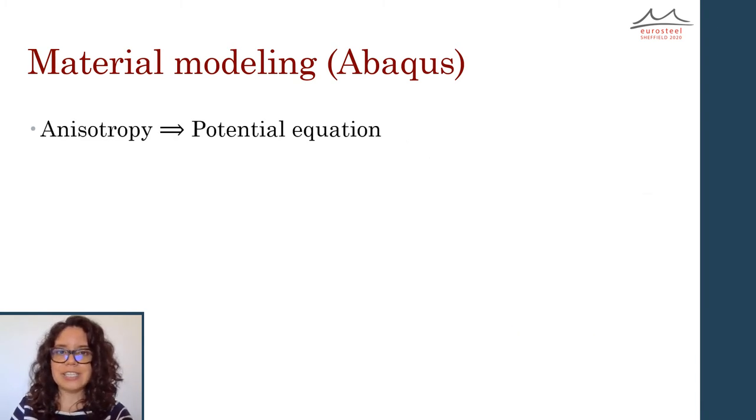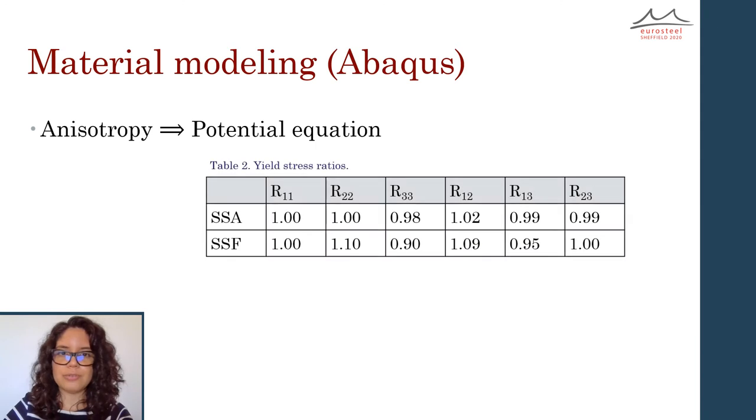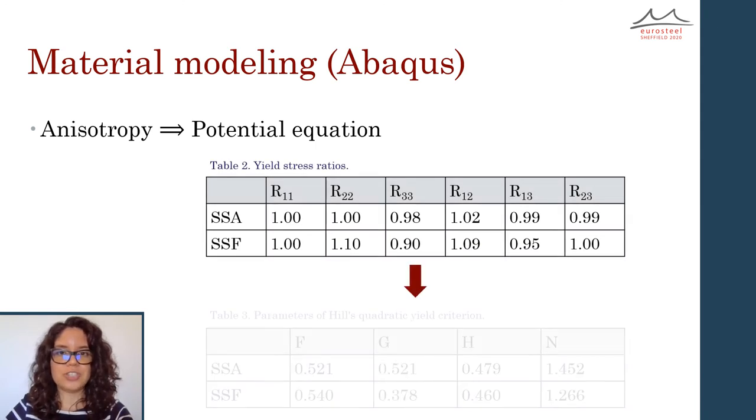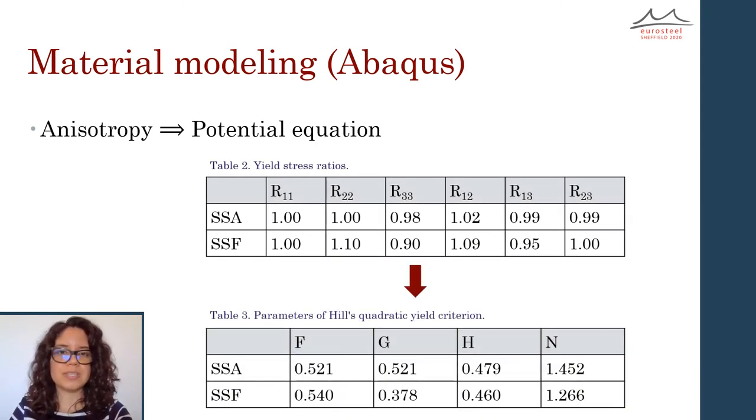Lastly, the yielding behavior of the materials was modeled using an anisotropic yield surface with an associated flow rule available in Abaqus through the potential keyword. The yield surface is user-defined by six stress ratios. Fortunately, these stress ratios have a one-to-one correspondence to Hill's anisotropic coefficients.